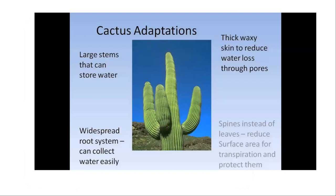Thinking about the cactus — all of these started from the same single-cell organism, but over time adaptation plays into natural selection and evolution. The cactus adaptations are in relation to the desert environment it lives in: extremely hot and extremely dry. So the cactus adapts to better survive in that environment.